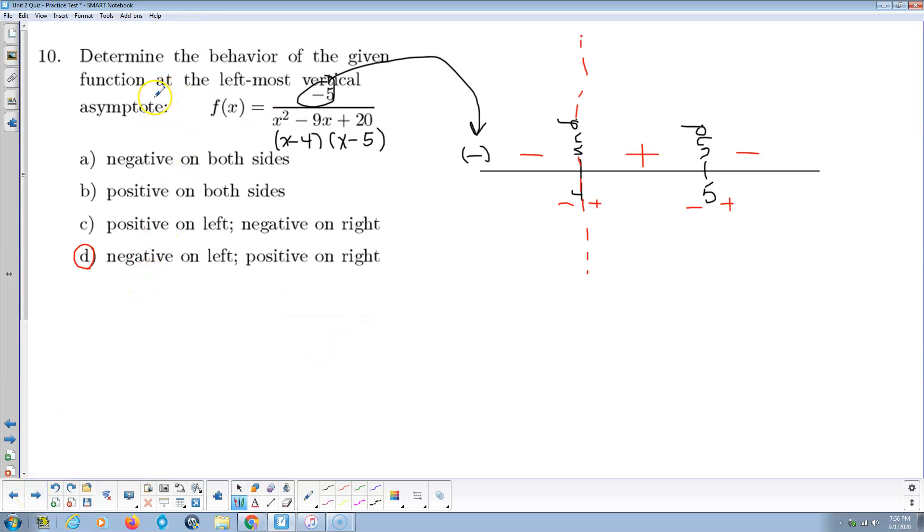Determine the behavior of the given function at the leftmost vertical asymptote. There's our function. Notice the denominator factors to x minus 4, x minus 5. So that means our key points here, critical points, are 4 and 5. And there the function's undefined. So these are both vertical asymptotes. And we want the leftmost vertical asymptote. So we're concerned with the dotted red line. We don't care about this guy over here. The question asks, what's the behavior on both sides of this asymptote?